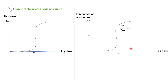If we extrapolate the 50% responders point to the x-axis, we get what is called ED50 — the dose that caused the response in 50% of the population. This curve is for drugs that have a specific response that cannot be graded; it is an all-or-none response. We call this type the quantal or all-or-none dose-response curve.